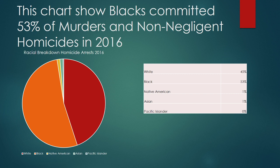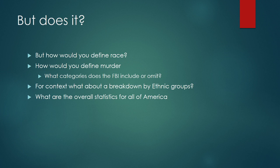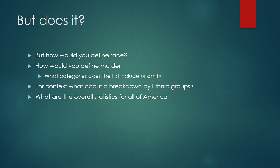If you looked at that chart you'd say African Americans committed more than half of all the homicides in the United States. But let's ask: how do you define race? If I arrest someone, do I let them self-identify as black? What if they have multiple characteristics — say, parents who were half Japanese and half Somali? Would that be African American, black according to the FBI, or Asian? Also, how do you define murder? What categories does the FBI include or omit? What if we broke this down ethnically — how would that change it? What's the whole context for statistics in the United States?